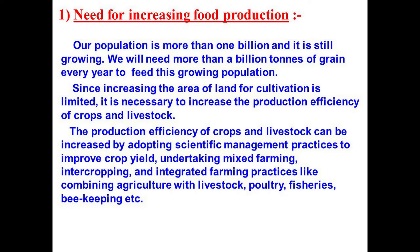Increasing the area of land for cultivation is limited, so it is necessary to increase the production efficiency of crops and livestock. Livestock means the animals — fish, cattle, goat — all are included in livestock. The production efficiency can be increased by adopting scientific management practices to improve crop yield, undertaking mixed farming, intercropping and integrated farming practices like combining agriculture with livestock, poultry, fisheries, beekeeping, etc.